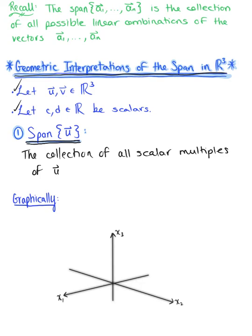You could also say that this is the collection of all linear combinations of vector u. But since we're dealing with a single vector, saying the collection of all scalar multiples is sufficient. Here is that linear combination of vector u, a.k.a. the scalar multiple of vector u.